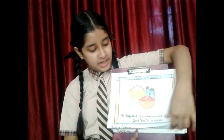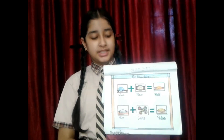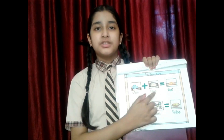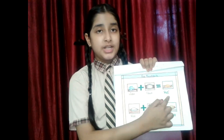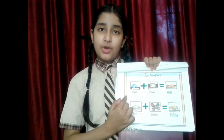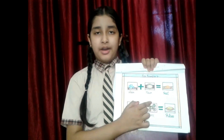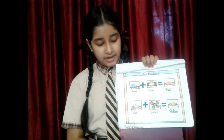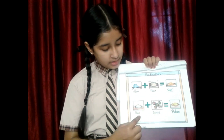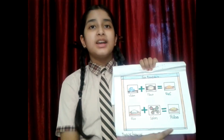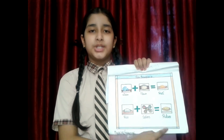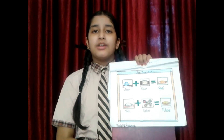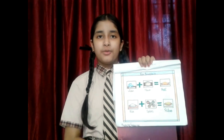I will explain with some examples. Water plus flour is equal to roti, so water and flour are ingredients to make roti. Another example: rice plus spices is equal to pulao, so rice and spices are ingredients to make pulao.